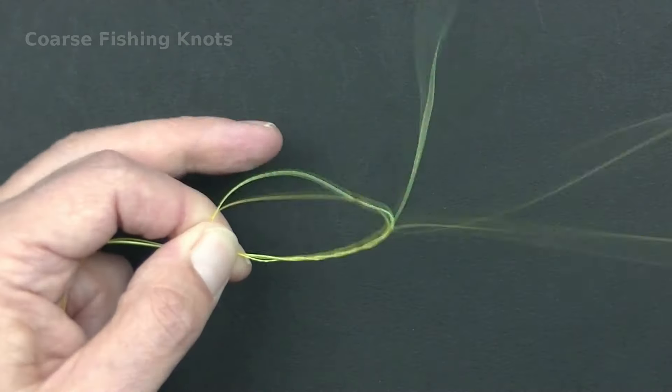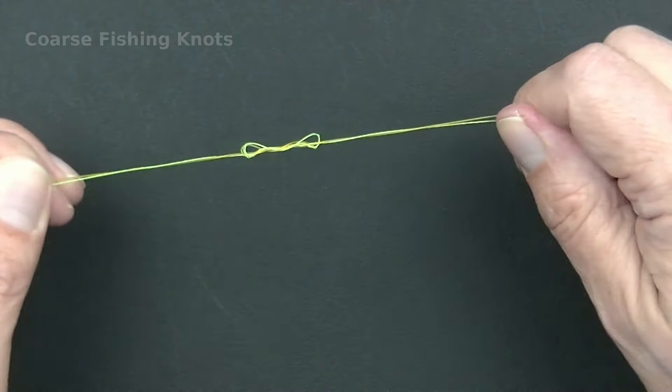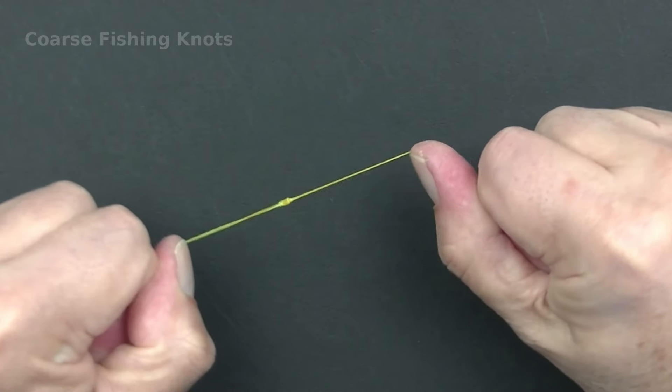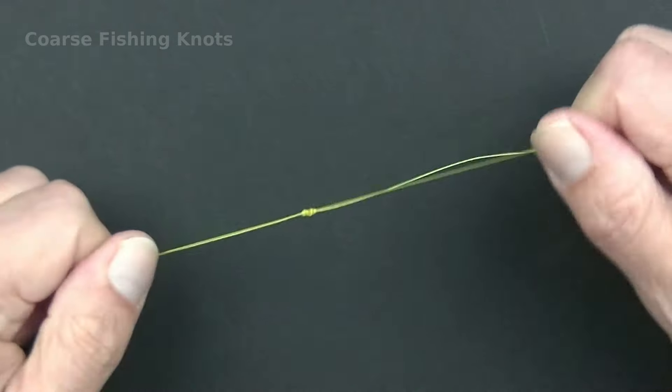Wet the knot with water or saliva to help the line slide and tighten down. Pull on the line and tail end on each side of the knot to fully tighten.